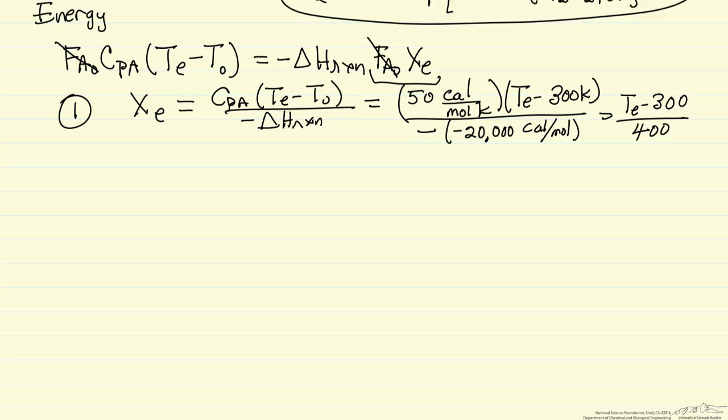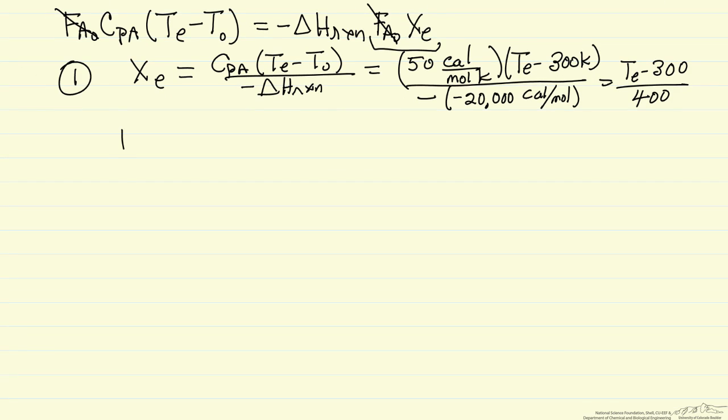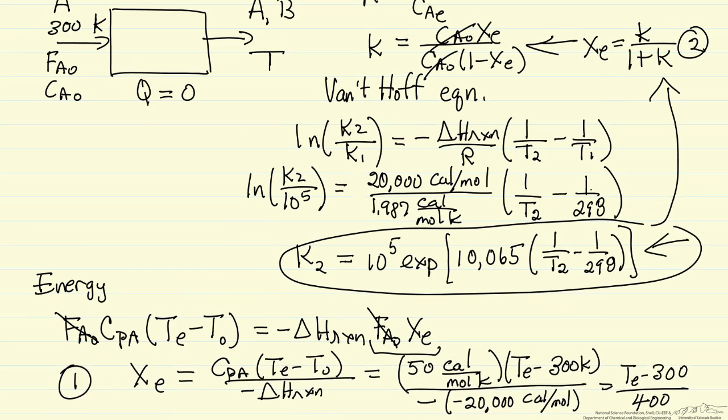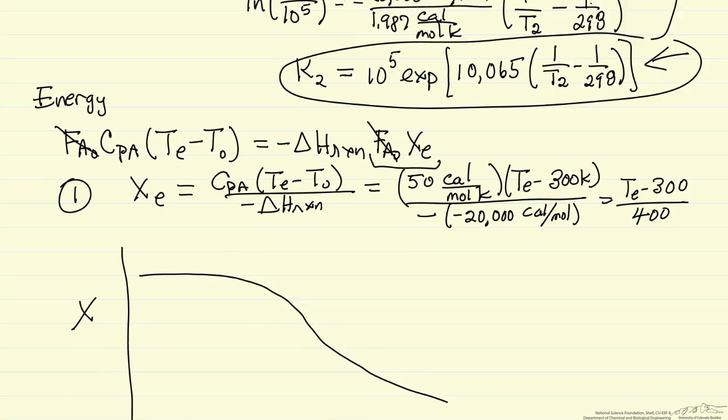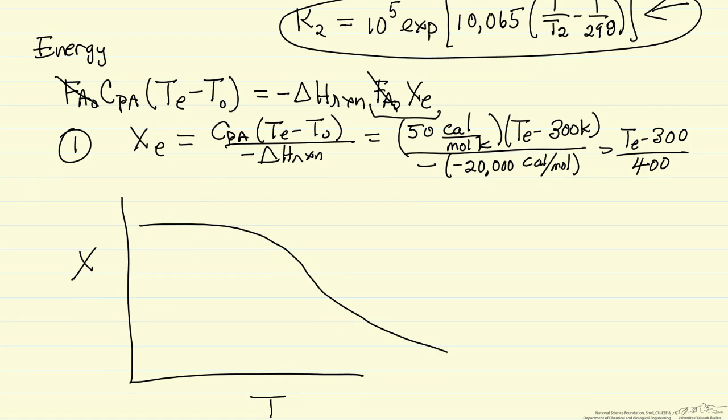If we look at what these equations look like, this is an exothermic reaction. As I raise the temperature, the equilibrium conversion goes down. Very low temperature should be close to one and then it decreases as I raise the temperature. That's what equation number two is going to show. Equation number one is just a straight line, the energy balance. So this is energy balance and this is the equilibrium relationship.